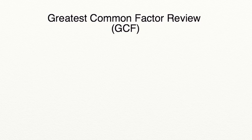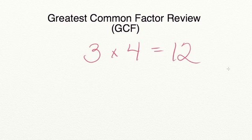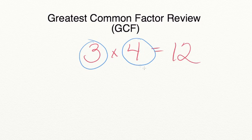Let's begin by discussing what a factor is. A factor is a number that you multiply by another number to equal a product. For example, if we were to multiply 3 times 4 to equal a product of 12, our factors would be 3 and 4 because those are the two numbers that we're multiplying together to equal a product of 12.